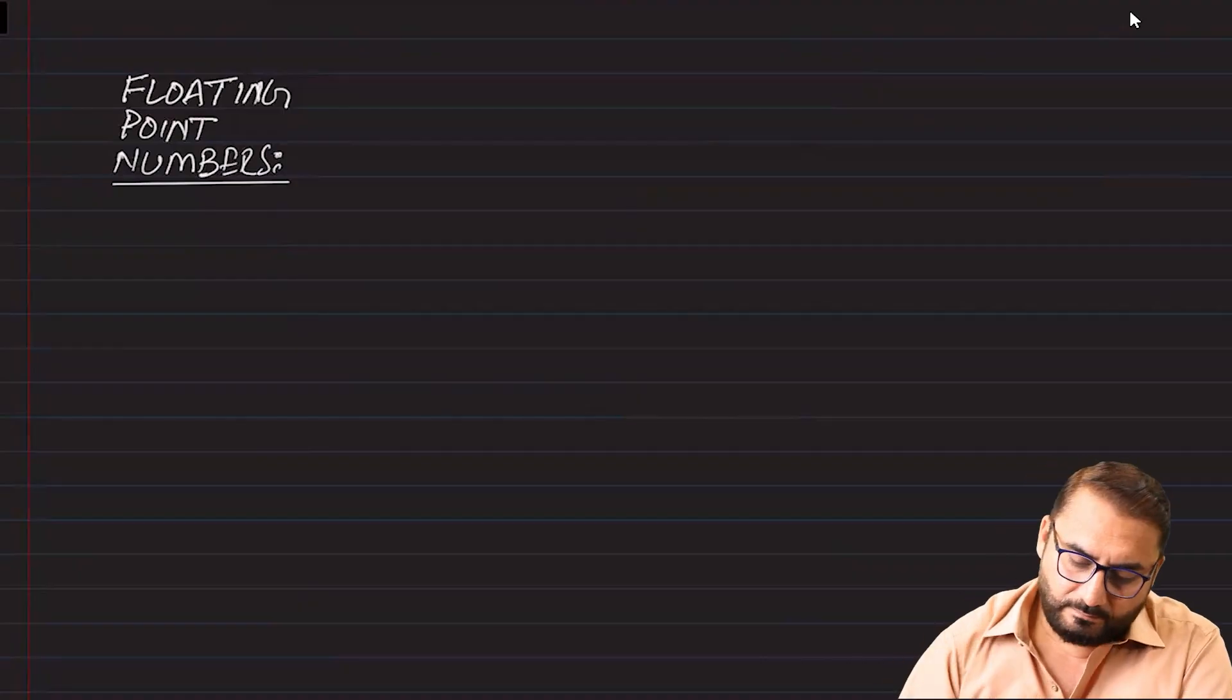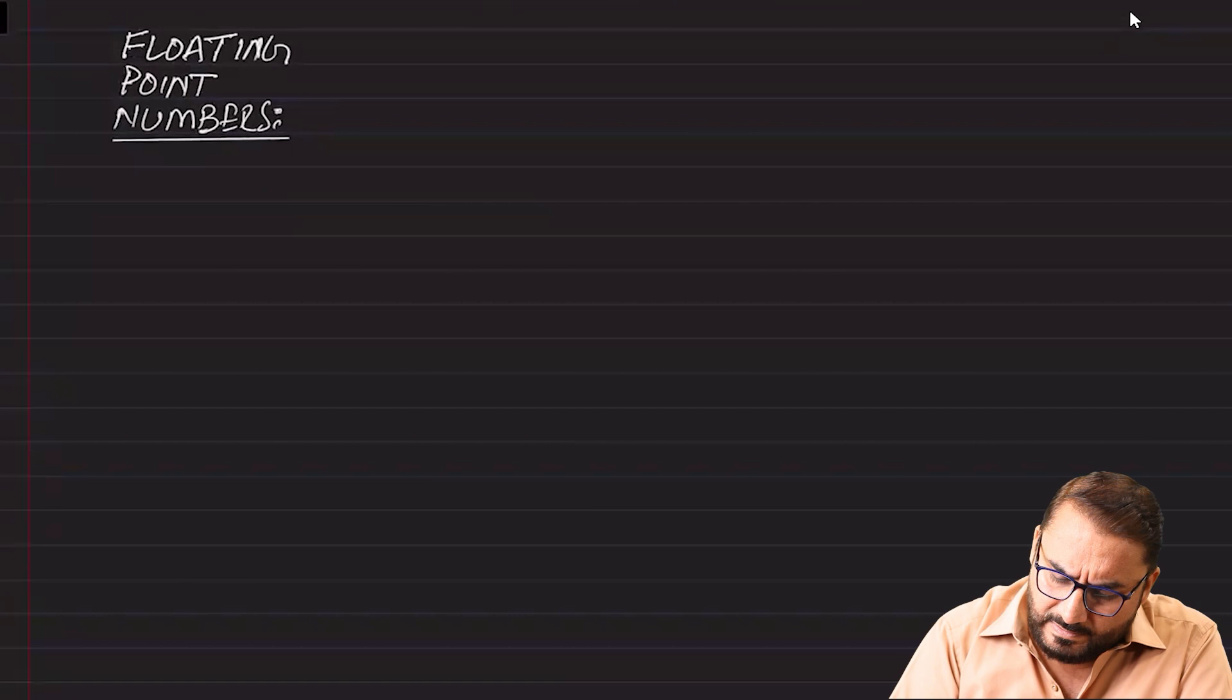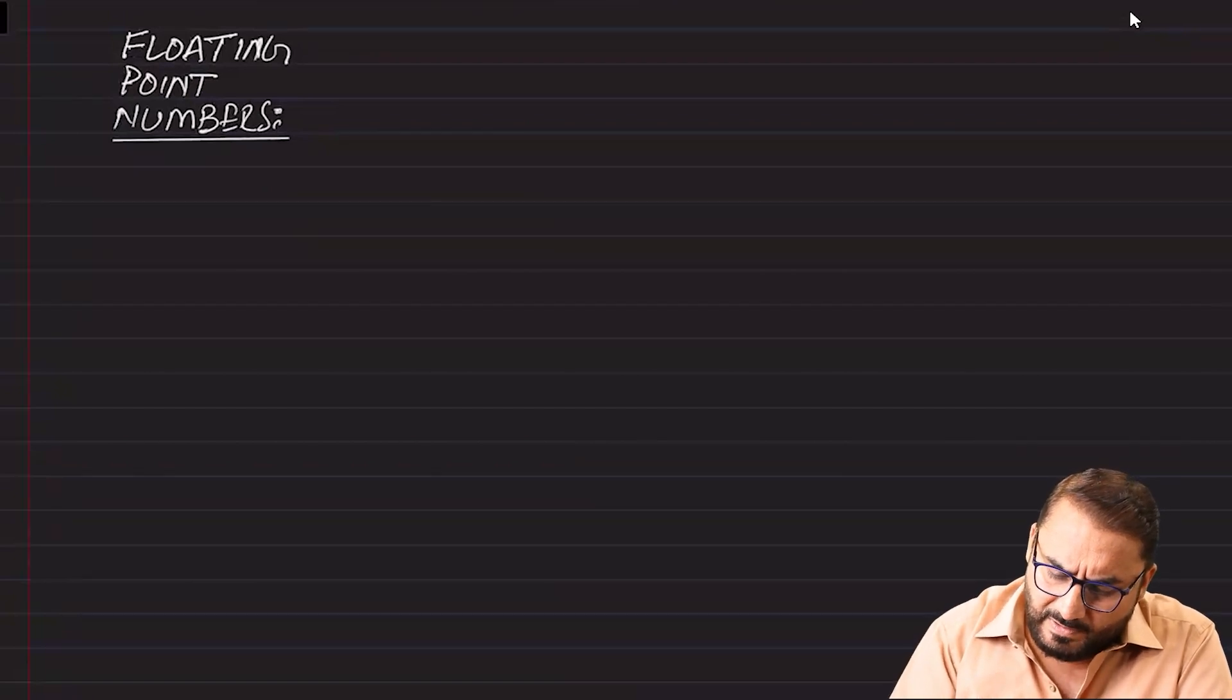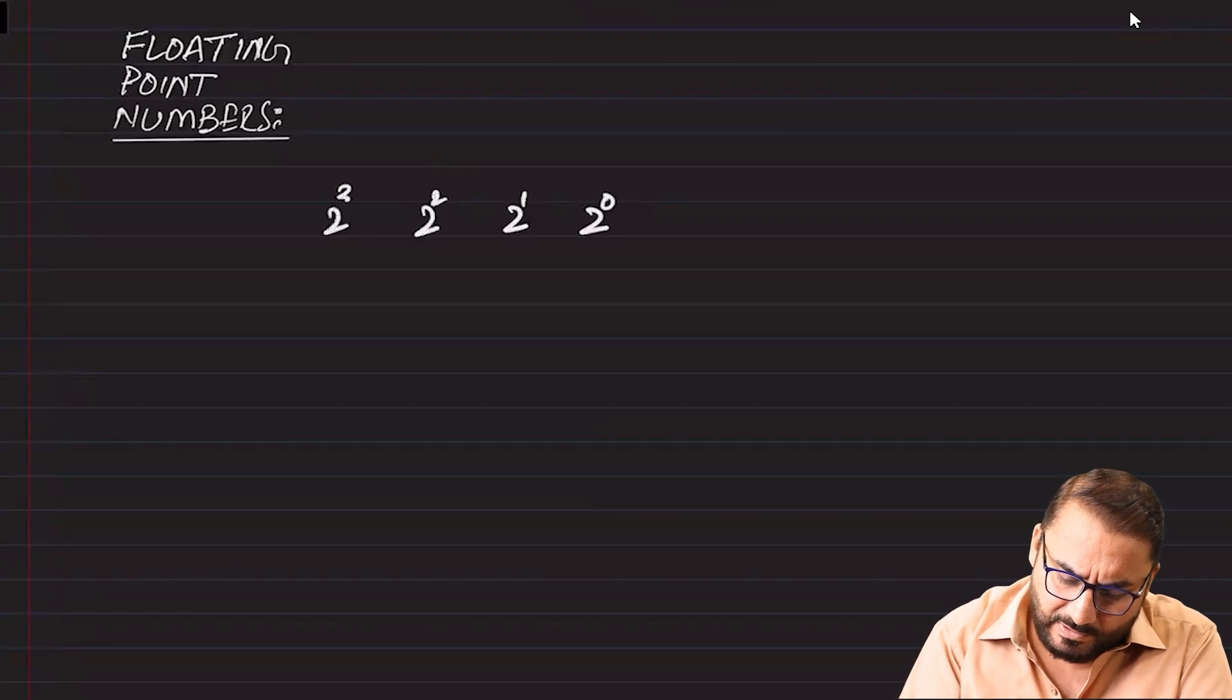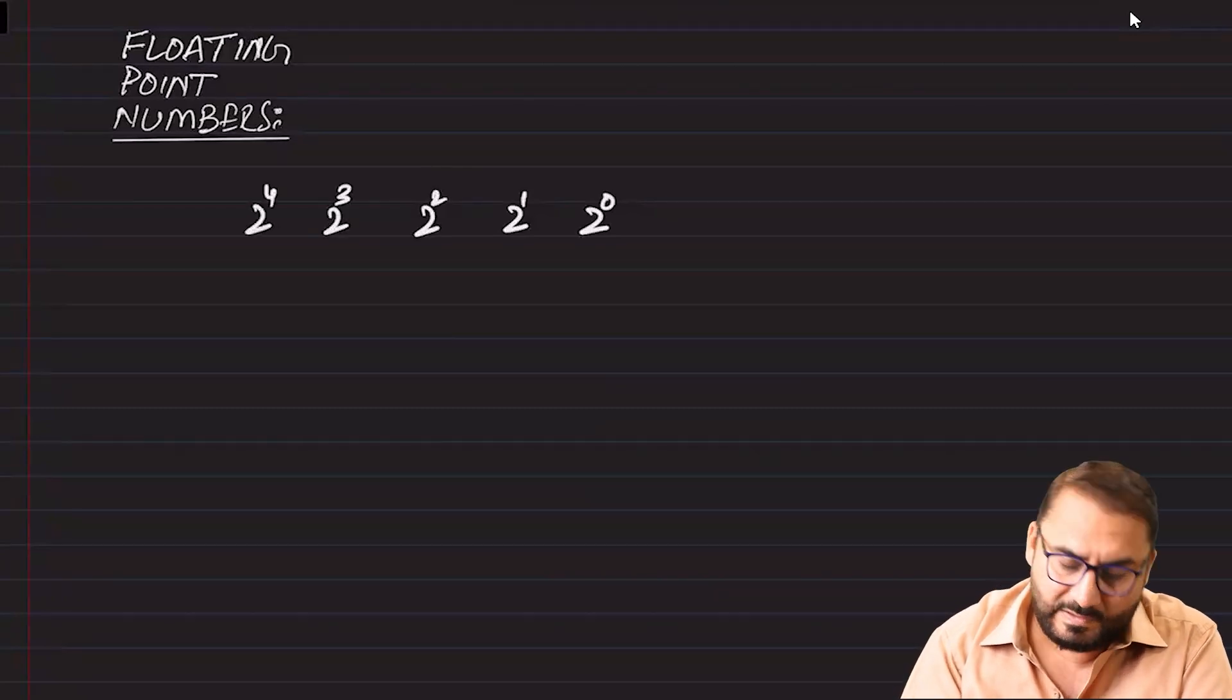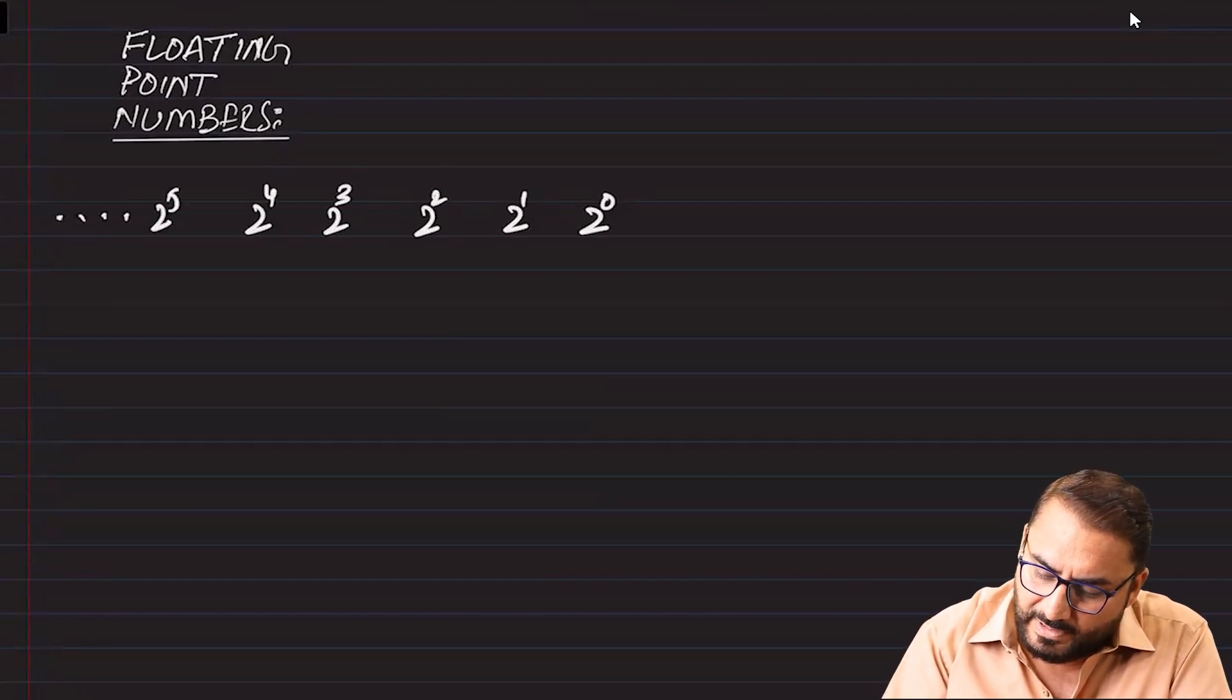Let's start floating point in which you have an integer 2 power 0, 2 power 1, 2 power 2, 2 power 3, 2 power 4, 2 power 5. This is the same way we are going to do. So on the point side we have 2 power minus 1, 2 power minus 2, 2 power minus 3, 2 power minus 4, 2 power minus 5, 2 power minus 6.